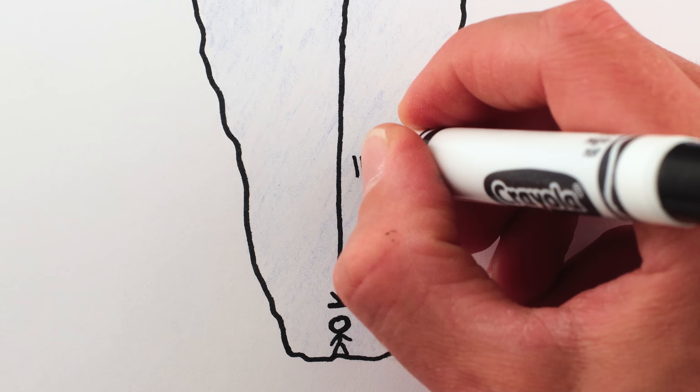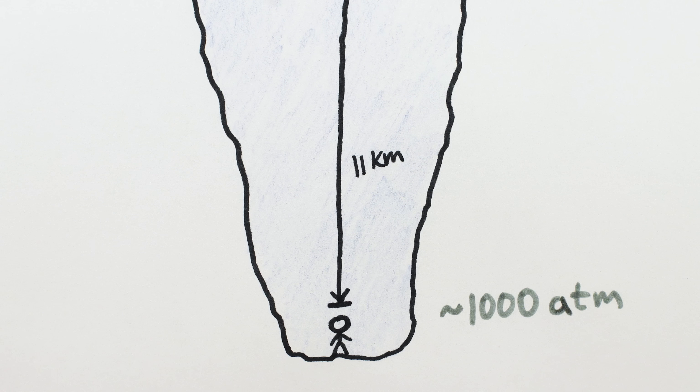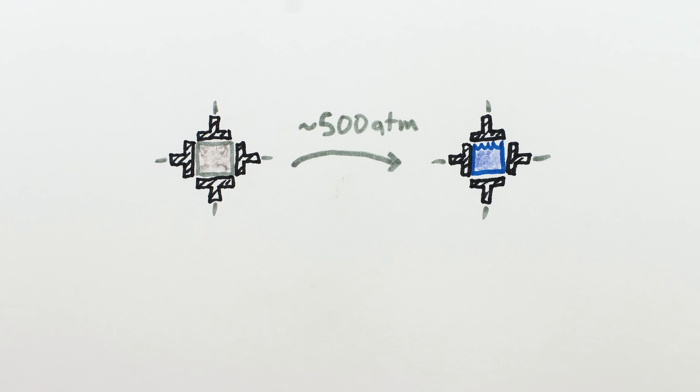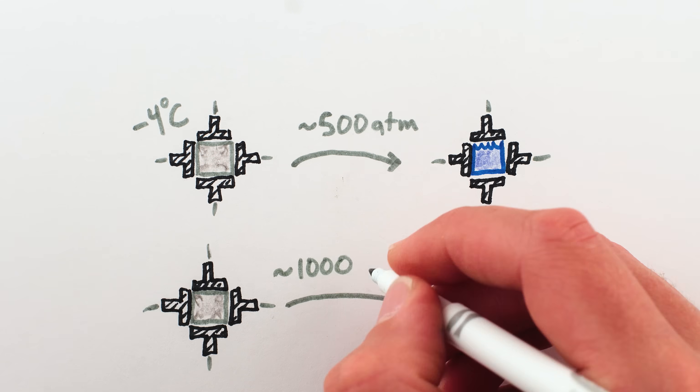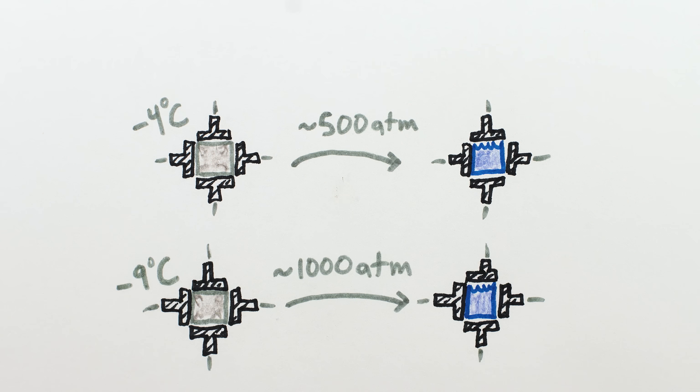Down here, there's 11 kilometers of water pressing down on you from above, and the weight of all that water generates around a thousand times atmospheric pressure. And pressure can melt ice. You only need 500 times atmospheric pressure to melt ice down to negative 4 degrees Celsius. And if you have a thousand times atmospheric pressure, like at the bottom of the Mariana Trench, then you'll melt ice down to around negative 9 Celsius.